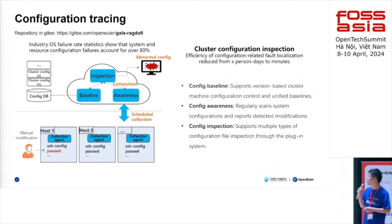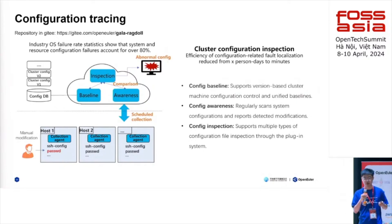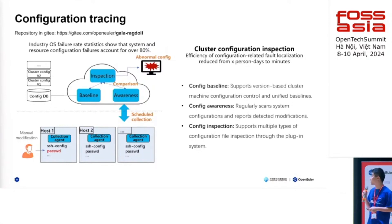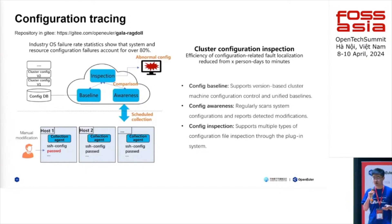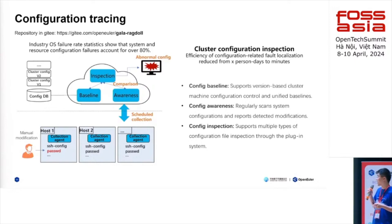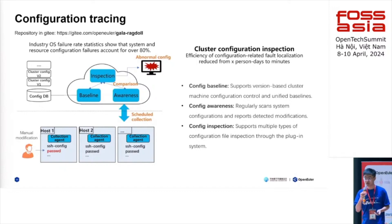The final feature I want to introduce is configuration tracking. According to statistics from our maintenance and SRE team, we found that over 80% of OS failures are caused by changes in configurations — for example, changing /etc/fstab can easily cause boot failure. Here we set a baseline for each host, regularly scan all hosts and report detected modifications, and also do version control of the configurations.